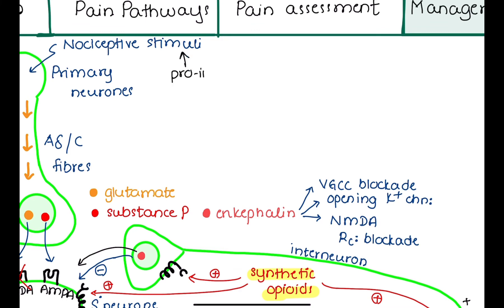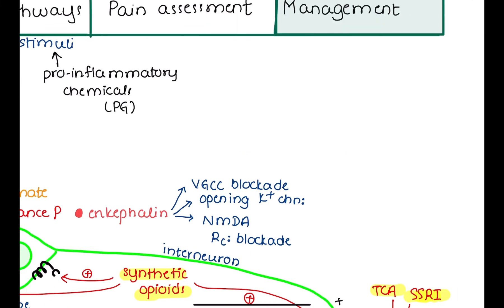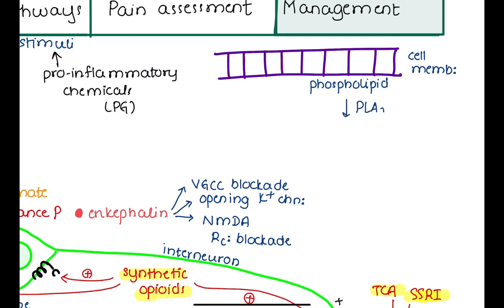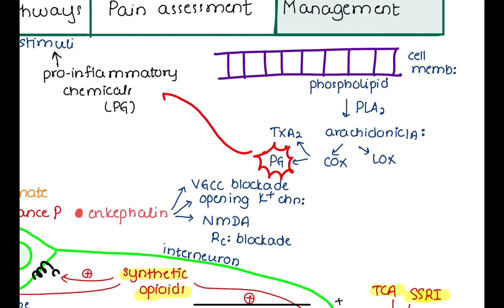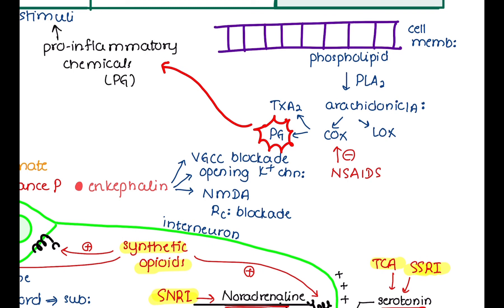Nociceptors are sensitized by pro-inflammatory mediators such as prostaglandins. When tissues are damaged, cell membrane phospholipids are converted to arachidonic acid, which activates the cyclooxygenase and lipoxygenase pathways, producing substances like prostaglandins and thromboxane A2. That is why NSAIDs such as aspirin, which inhibit the cyclooxygenase pathway, can reduce pain. Corticosteroids can also reduce pain by blocking the conversion of phospholipids to arachidonic acid by phospholipase A2.